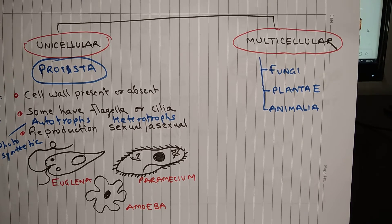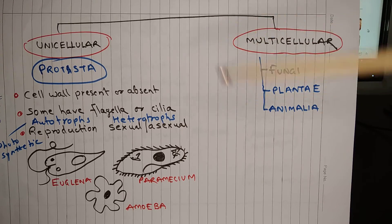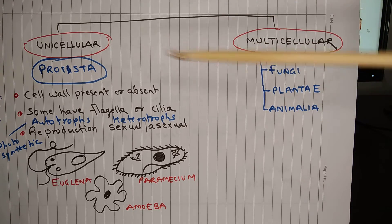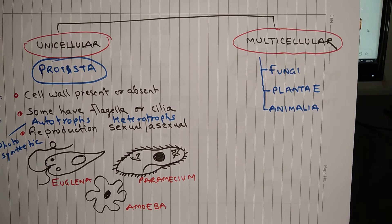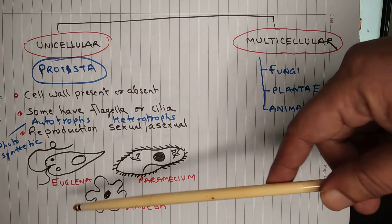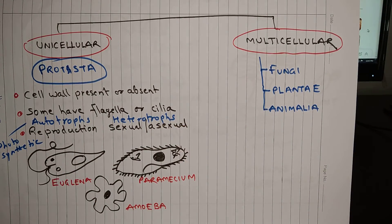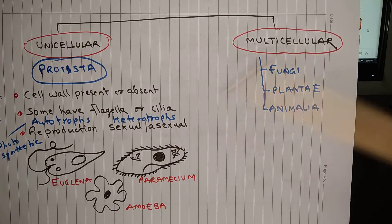Some key features of Protista: cell wall is present or absent. Some protists have flagella or cilia for locomotion. They can be autotrophic or heterotrophic in terms of mode of nutrition. Reproduction can be sexual or asexual. Examples of Protista include Euglena, Paramecium, and Amoeba.